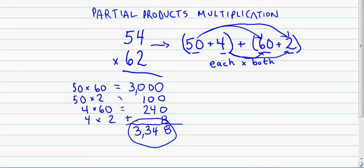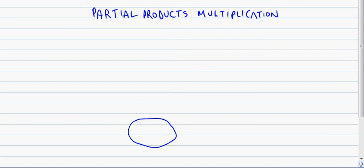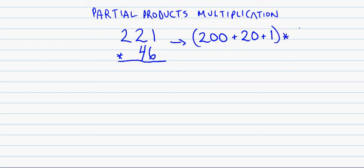Now we're going to go with a little bit more challenging of a problem here. We're going to go with a 3-digit times a 2-digit. And that's going to be a little bit more math, but the format is pretty much the same. So let's take 221 times 46. Again, I'm going to expand this 221, except now I have three addends here. 200 plus 20 plus 1 is what that expands to. And I multiply that times 40 plus 6.